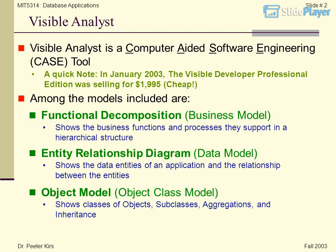A quick note: in January 2003, the Visible Developer Professional Edition was selling for $1,995 — cheap.